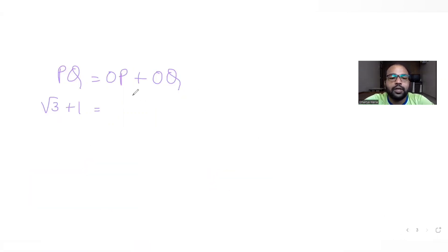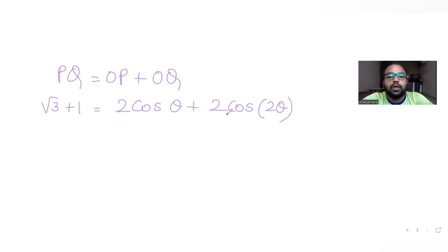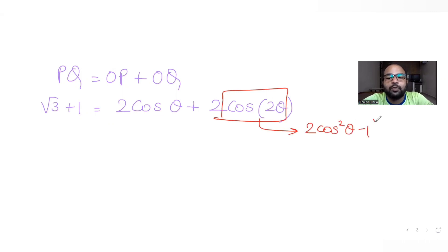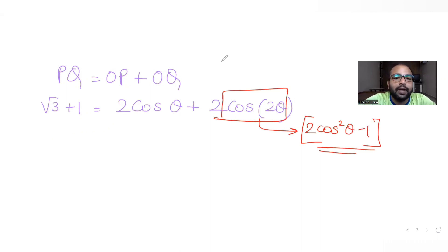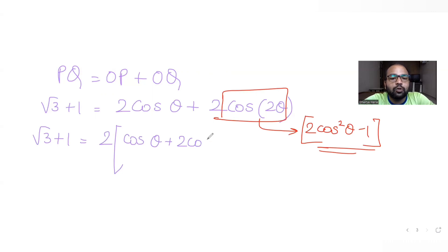So: PQ = OP + OQ = 2·cos(θ) + 2·cos(2θ) = √3 + 1. Applying the double-angle formula cos(2θ) = 2cos²θ − 1, factoring out 2: √3 + 1 = 2·cos(θ) + 2(2cos²θ − 1).